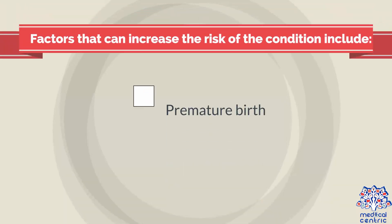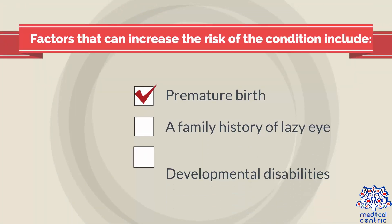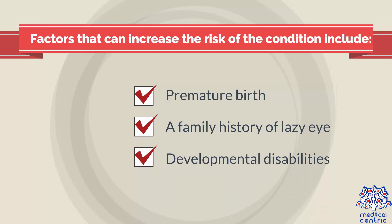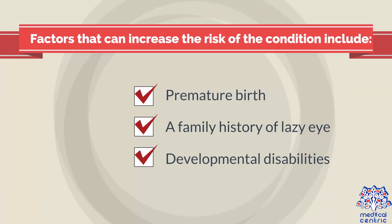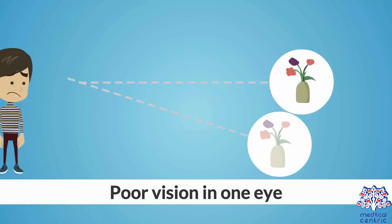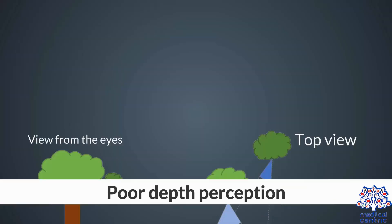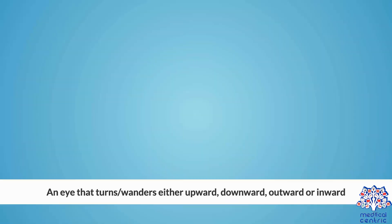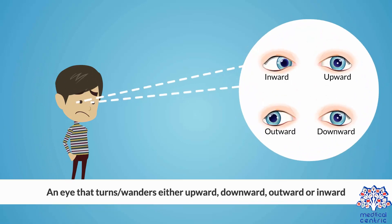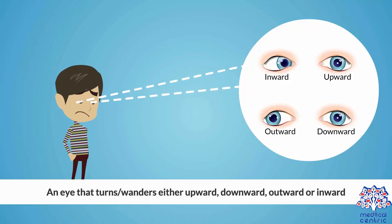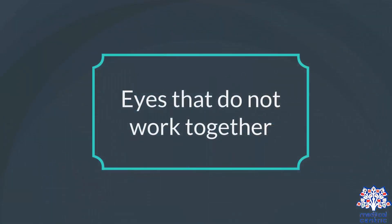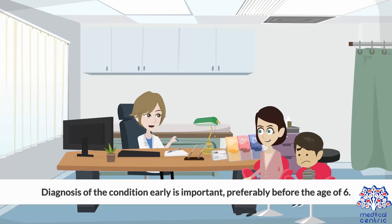Factors that can increase the risk of the condition include premature birth, a family history of lazy eye, and developmental disabilities. Symptoms include poor vision in one eye, poor depth perception, and an eye that turns or wanders either upward, downward, outward, or inward, with eyes that do not work together.